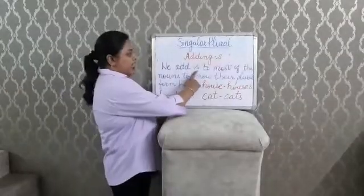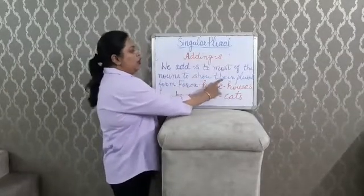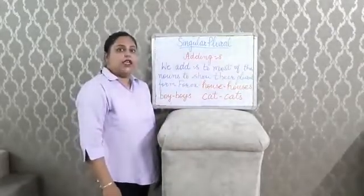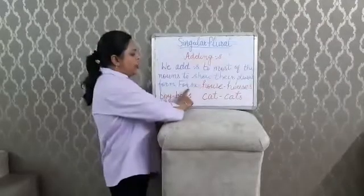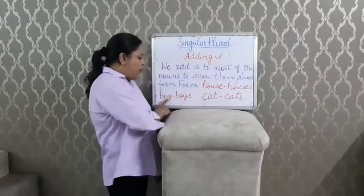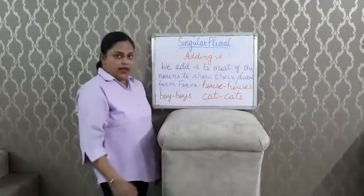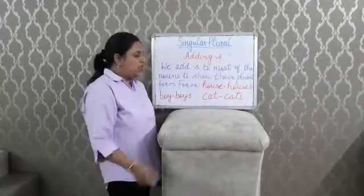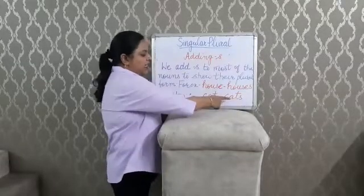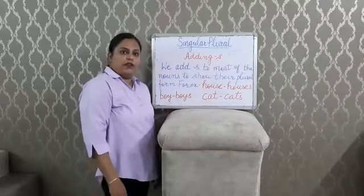We add 's' to most of the nouns to show their plural form. Let's understand this through some examples. For example: house becomes houses, boy becomes boys, cat becomes cats. In each of these nouns, we have added 's' to make their plural form.